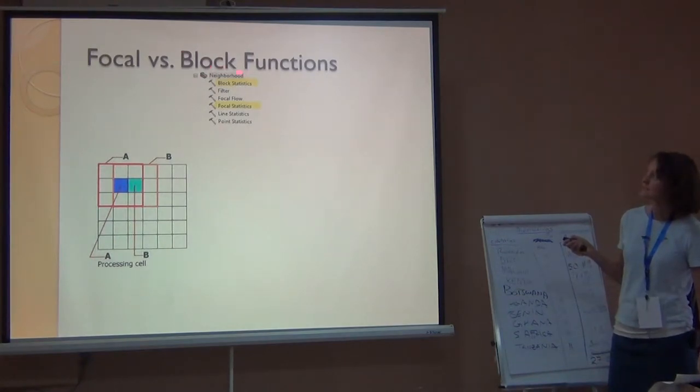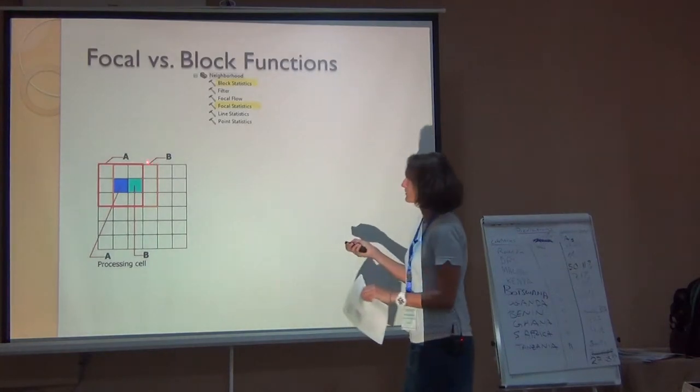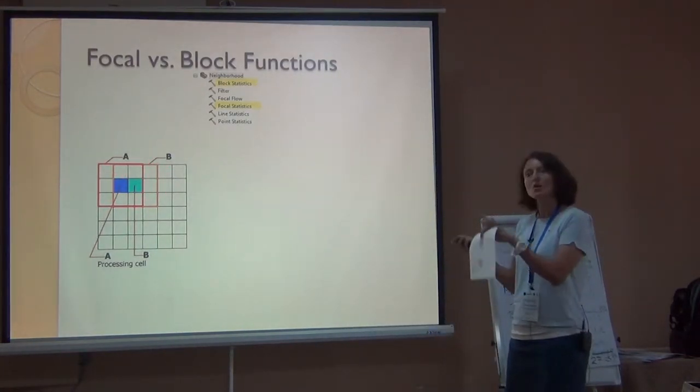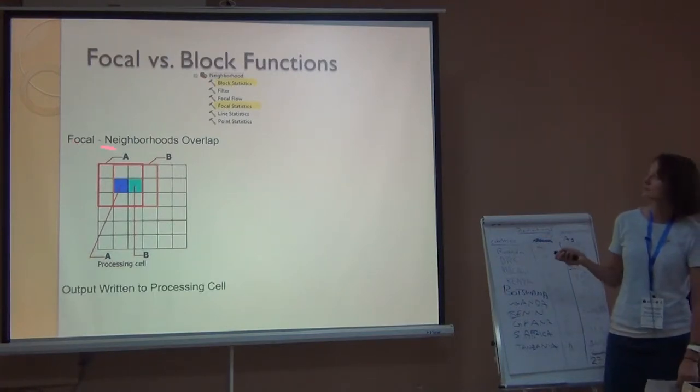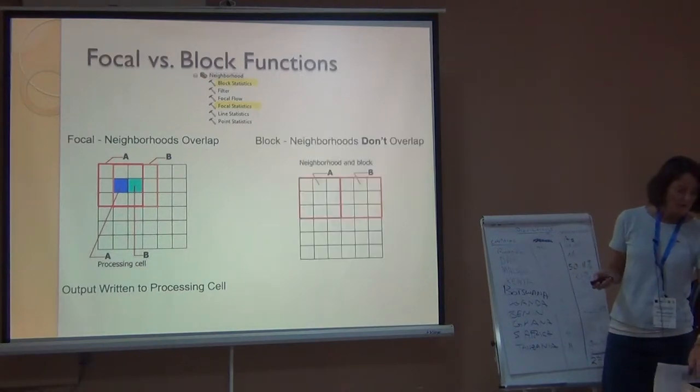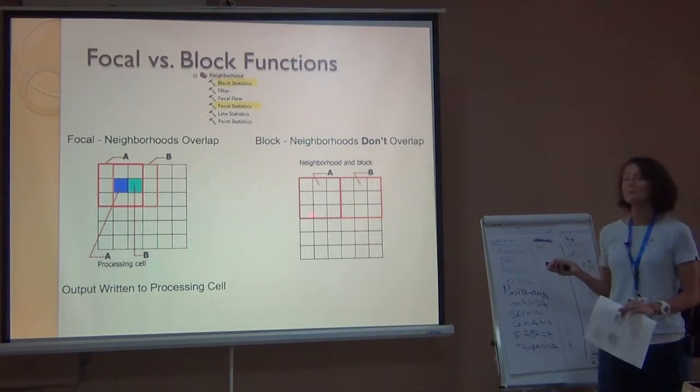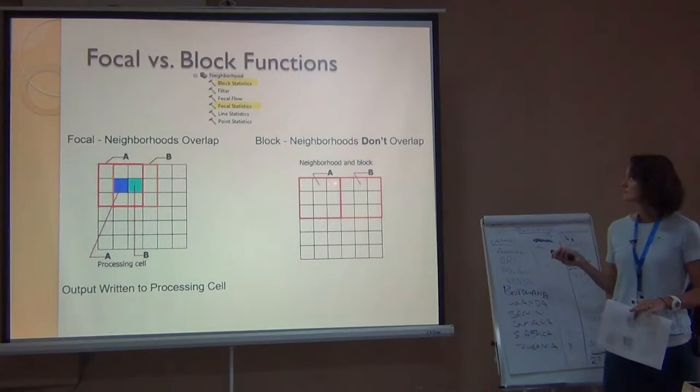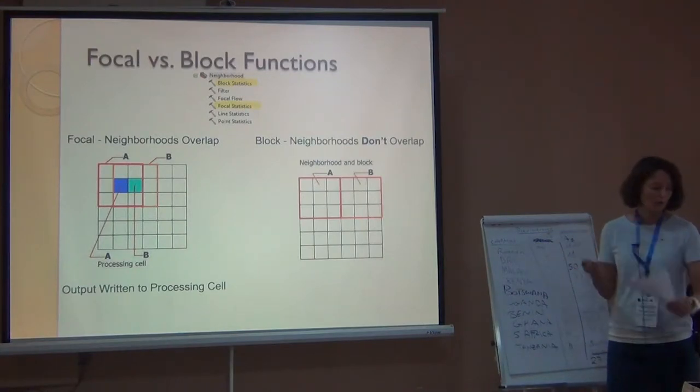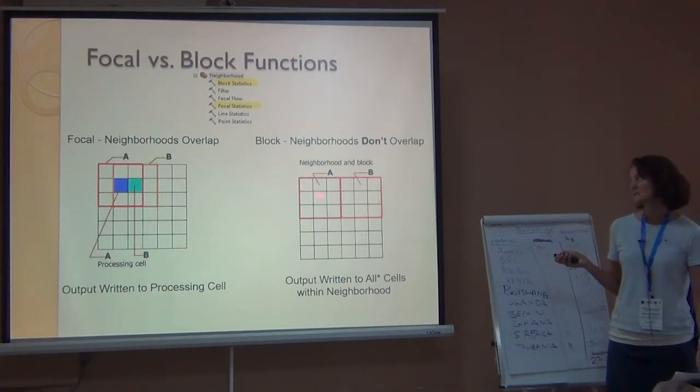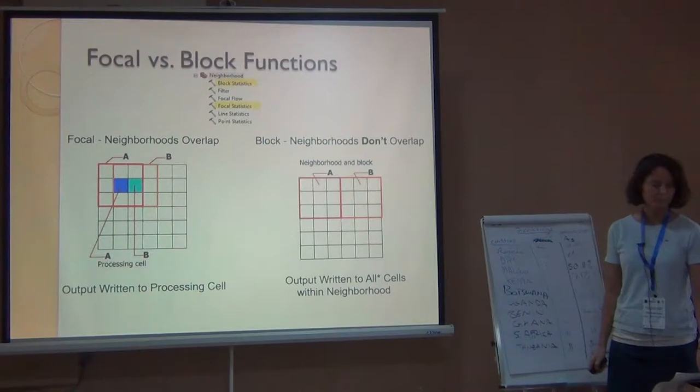There are focal neighborhood analyses and block neighborhood analyses. In a focal neighborhood analysis, that kernel, here it's depicted as a 3 by 3, that window moves just one cell over each time it does its analysis. In a block neighborhood analysis, so notice that those neighborhoods overlap. In a block neighborhood analysis, the neighborhoods don't overlap. This is still a 3 by 3 analysis, but it's a block neighborhood. And so you're looking at whatever min, max, mean you want in this 3 by 3 neighborhood. And you're outputting the value, in this case, at each cell. And then you're moving to a non-overlapping 3 by 3 neighborhood.